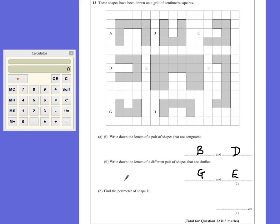Part B. Find the perimeter of shape D. So perimeter is the distance around the outside of a shape. It's not the squares that surround it, it's not the squares inside, it's the length of the lines.